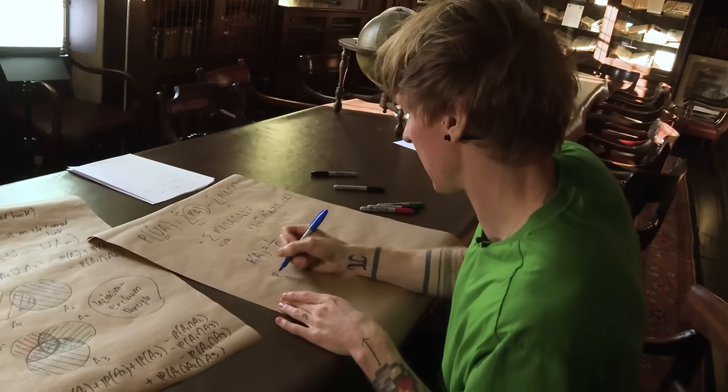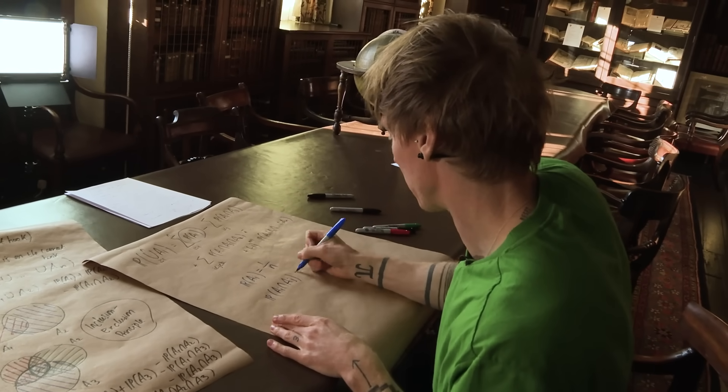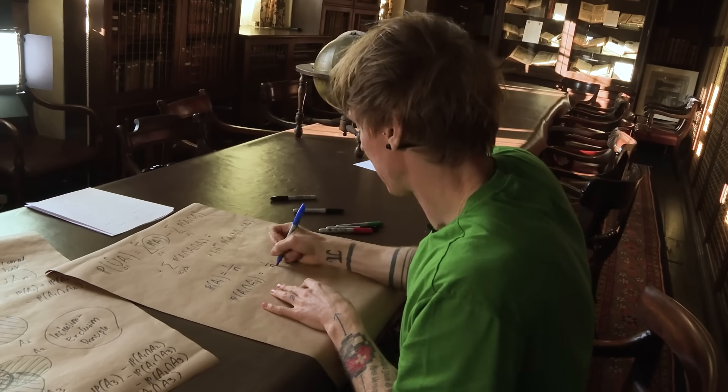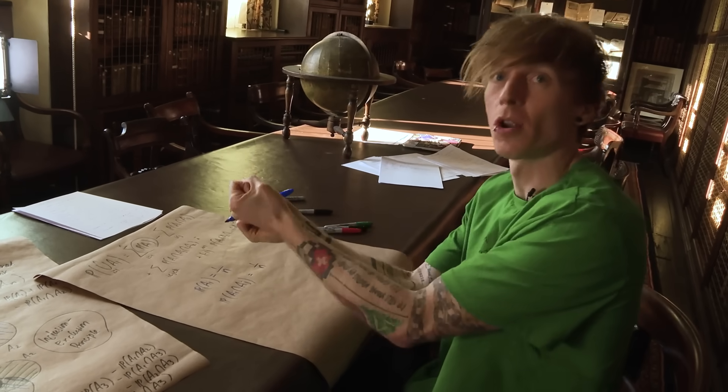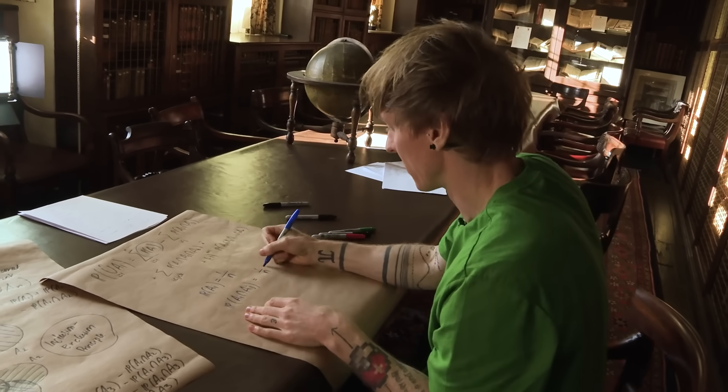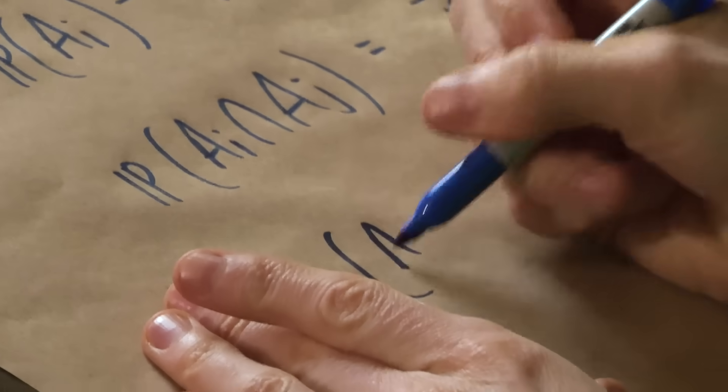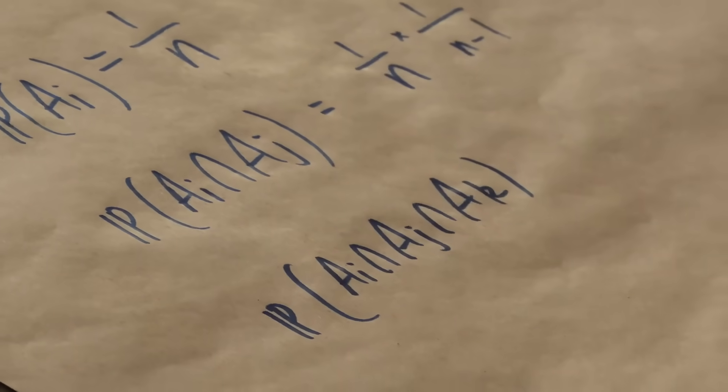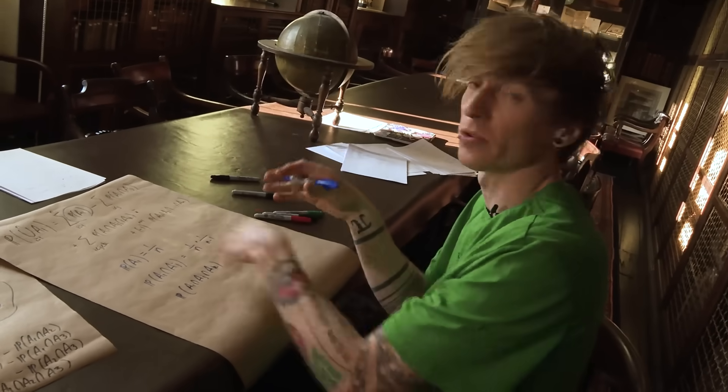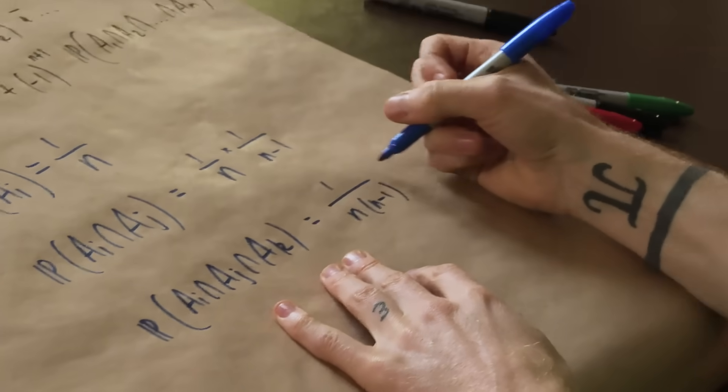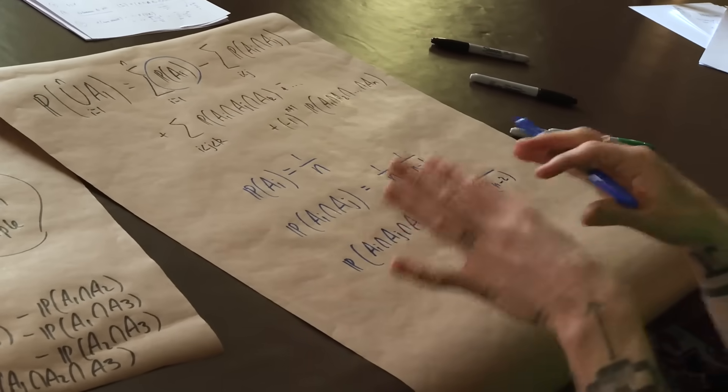The probability of two of them being correct, the first one is 1 out of n and then I need the second one to also be correct. There are n minus 1 left, and they're going to be multiplied because I need both of them to be true. So the probability of the triple is 1 over n for the first one, n minus 1 for the second one, and then an n minus 2 for that third. And we're just going to keep going this way.